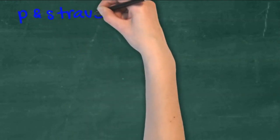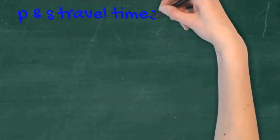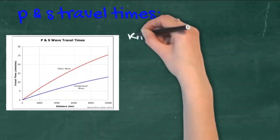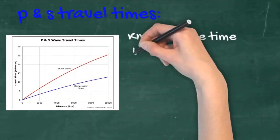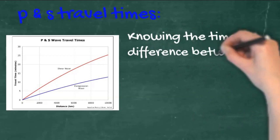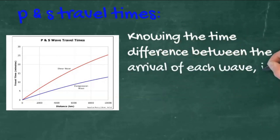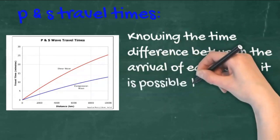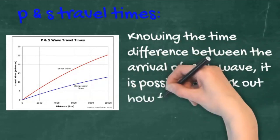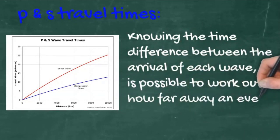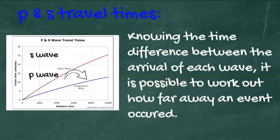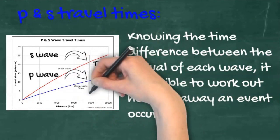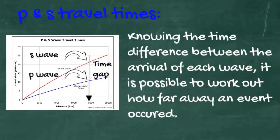It is possible to use the arrival time difference between the faster P waves and the slower S waves. If you know the interval, you can slip that vertically between the two lines of the graph, and where it fits in will be the distance away of the event.